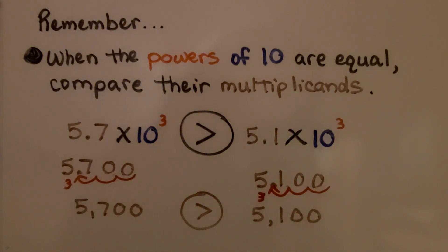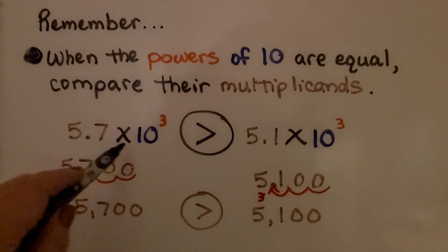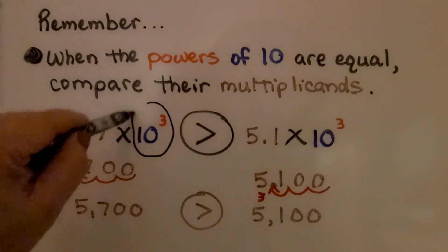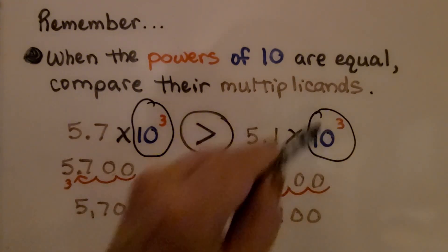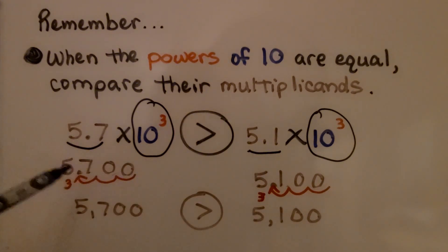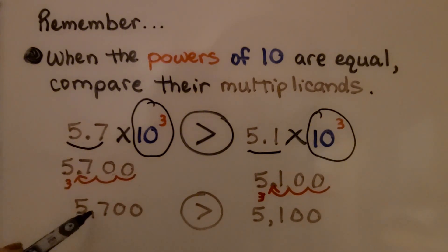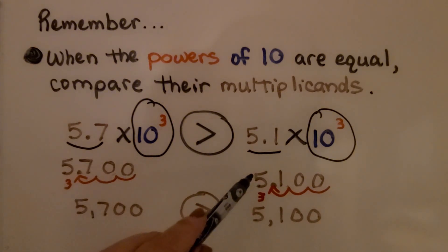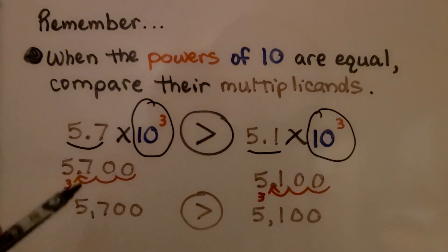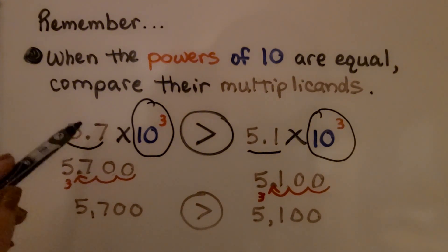And remember: when the powers of 10 are equal, compare their multiplicands. Here we have 5 and 7 tenths times 10 to the third power and 5 and 1 tenths times 10 to the third power — they have the same power of 10. 5 and 7 tenths times 10 to the third is 5,700, and 5 and 1 tenths times 10 to the third is 5,100, so 5 and 7 tenths is greater.